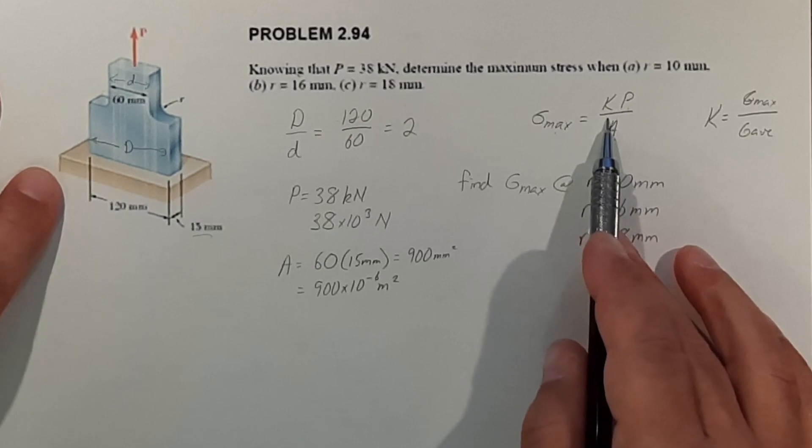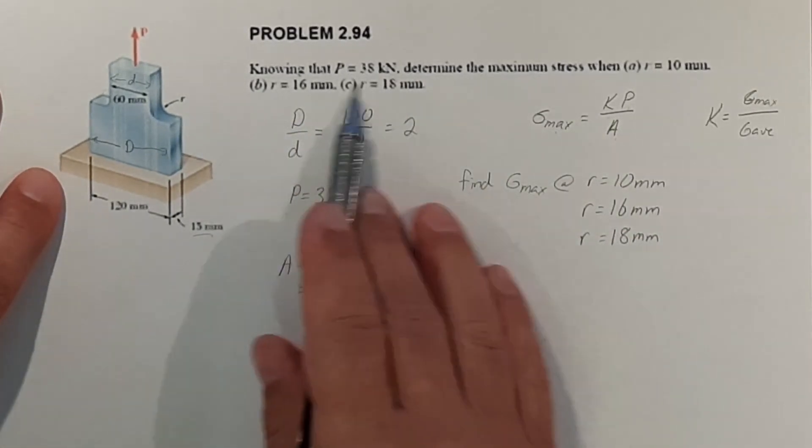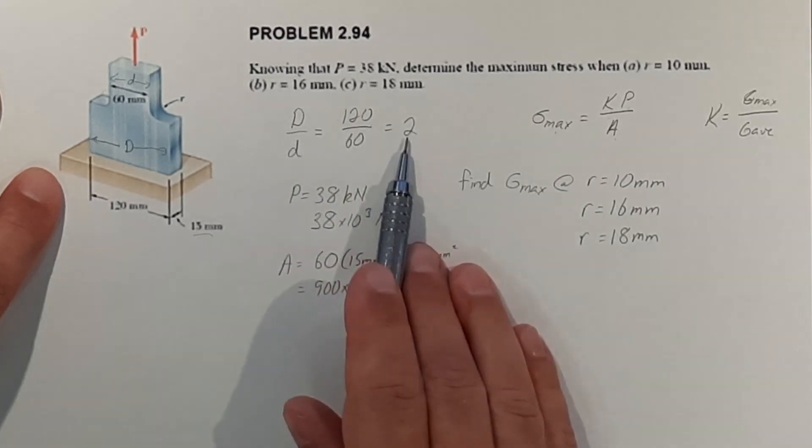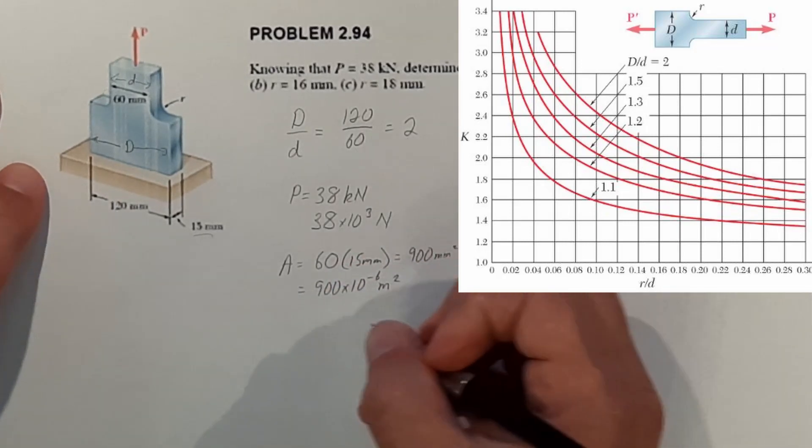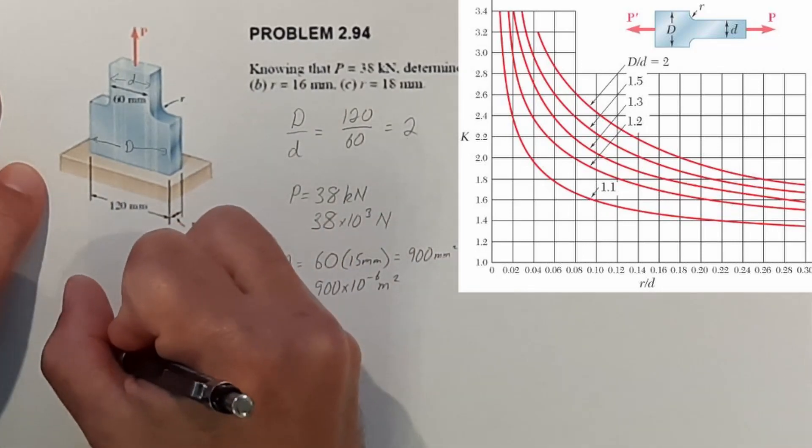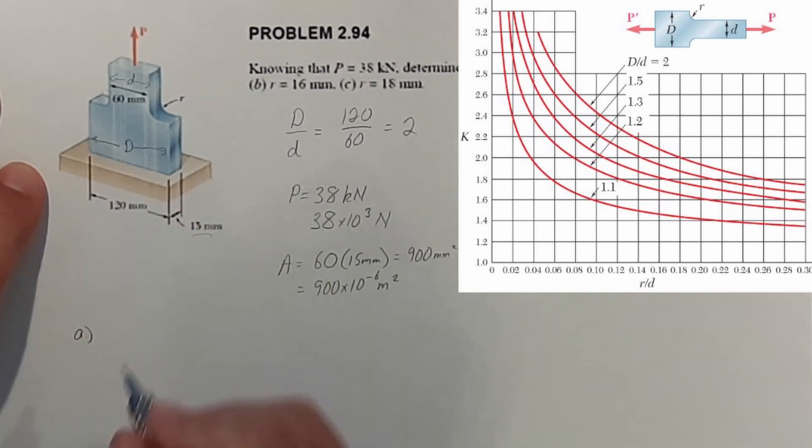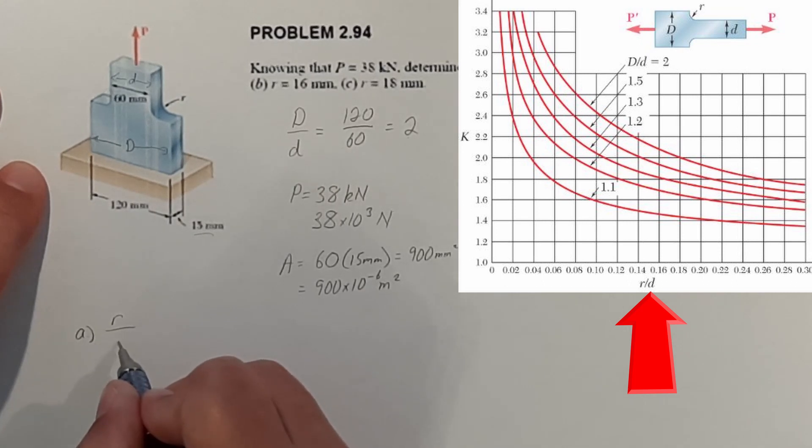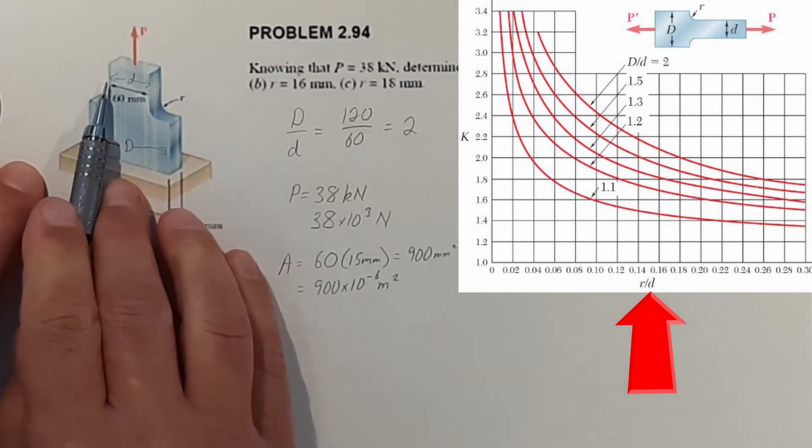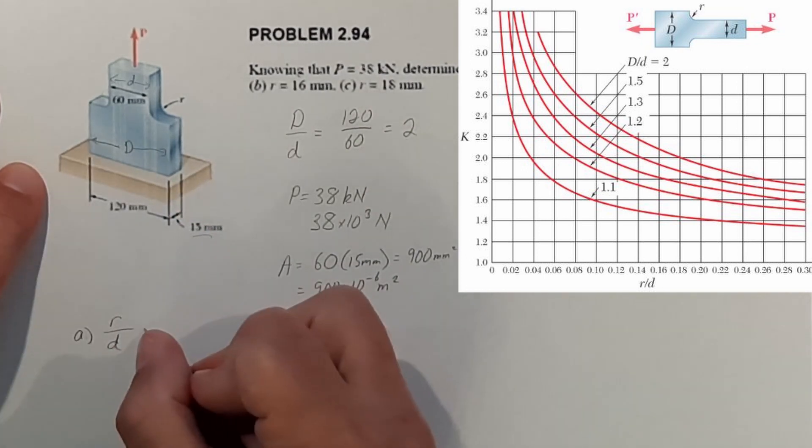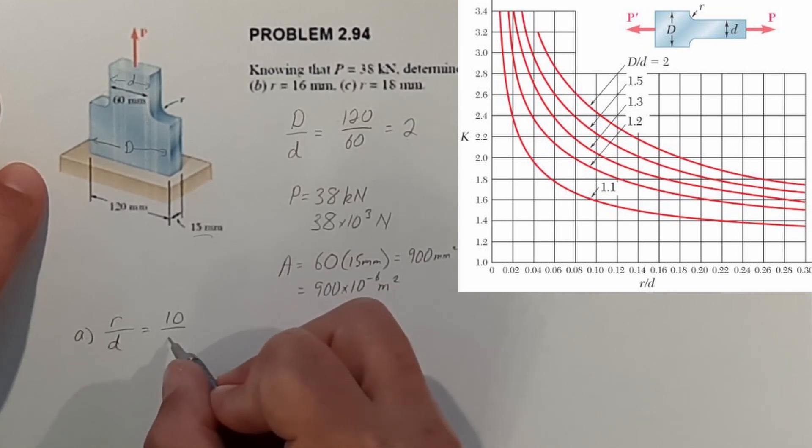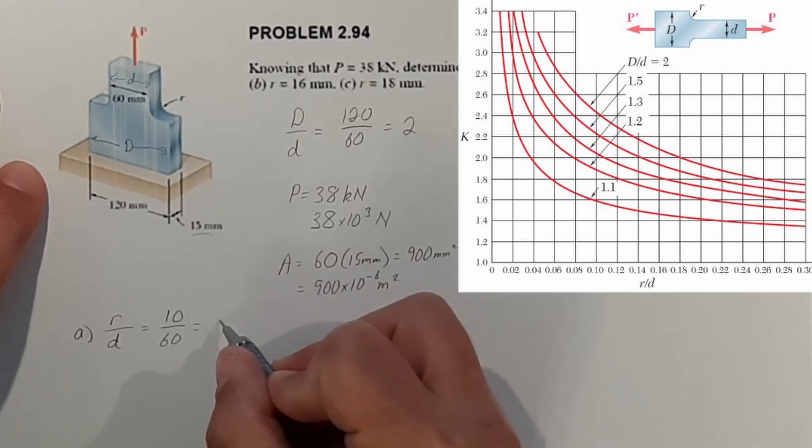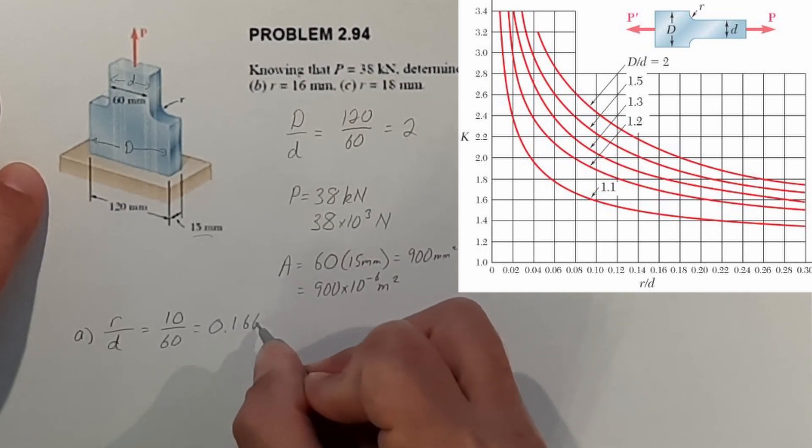So to find K we use this value here. So we know that the ratio is 2 and we actually go to our chart. What we need to find for the first one is the ratio of our fillet radius over little d, which is its top width. So that is 10 over 60 and that equals 0.1667.